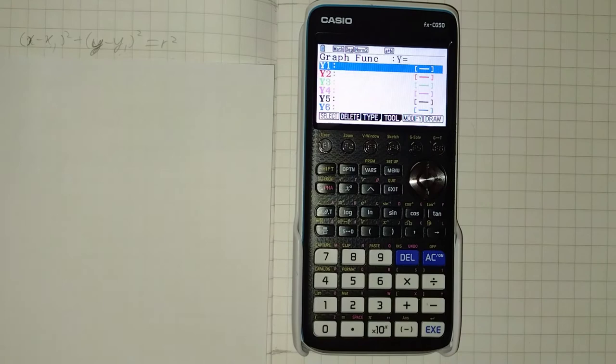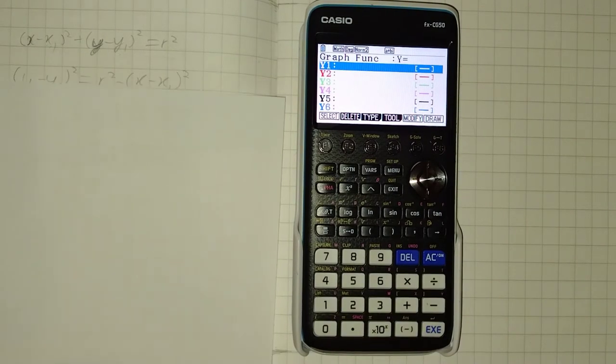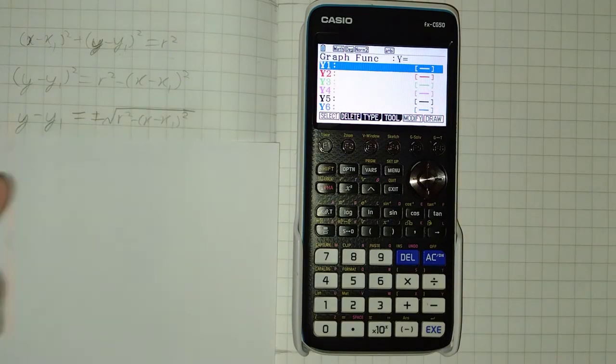So to do that we're going to need to rearrange our equation. We're going to start by subtracting x subtract x1 squared from each side of the equation, leaving us with this. We will then take the square root, giving us this, important to take the positive or negative or else we'll only get half the circle.